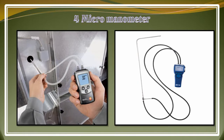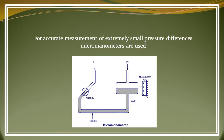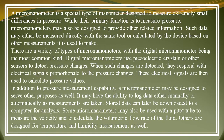The last device is the micromanometer. As you can see, a technician is using a micromanometer, and on the right-hand side there is a different but similar model. A micromanometer is a special type of manometer designed to measure extremely small differences in pressure. While its primary function is to measure pressure, micromanometers may also be designed to provide other related information, which can be measured directly or calculated by the device based on other measurements.